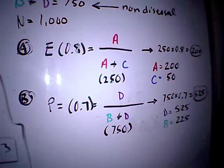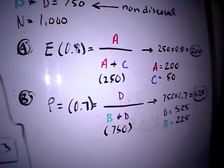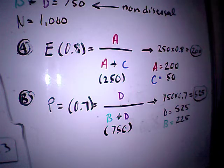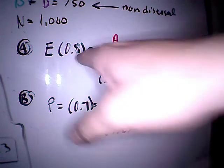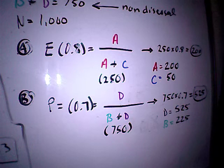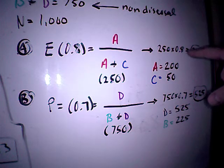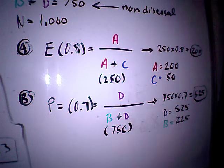So if you remember E, which is our sensitivity, equals A divided by A plus C. In this case it's 0.8, that's 80%. Well, I know that A plus C equals 250, so why not just put 250 down in the denominator, and then I just have some basic algebra to do, and that is 0.8 equals A divided by 250. We can multiply by 250, so 250 multiplied by 0.8 just gives me 200, so I now know that A must be 200.